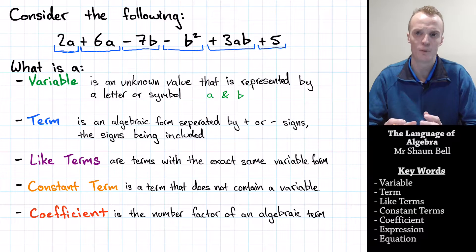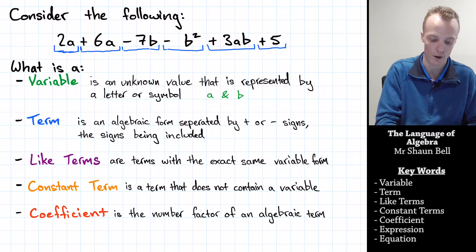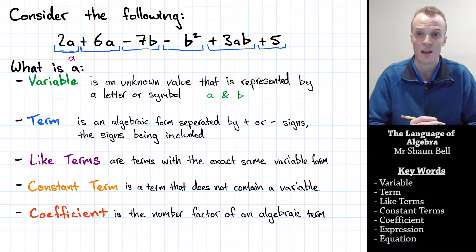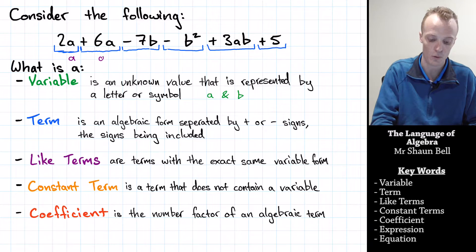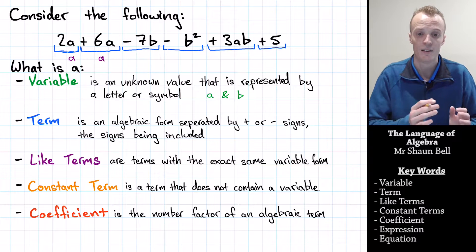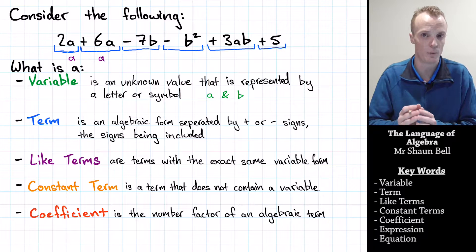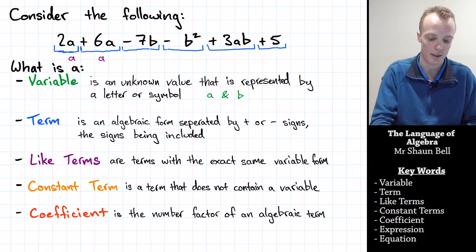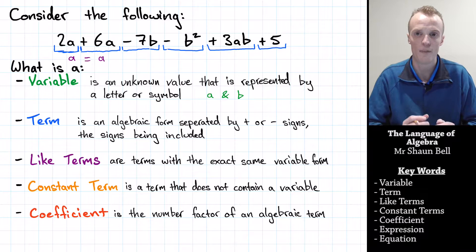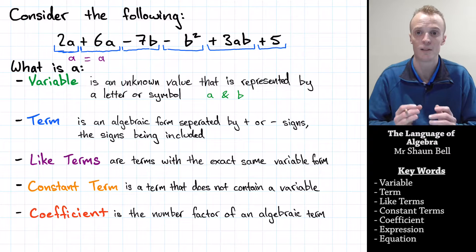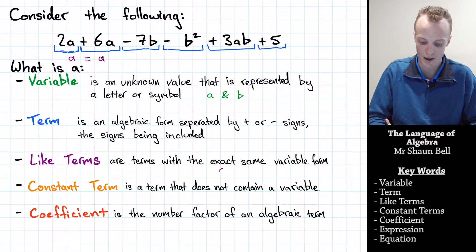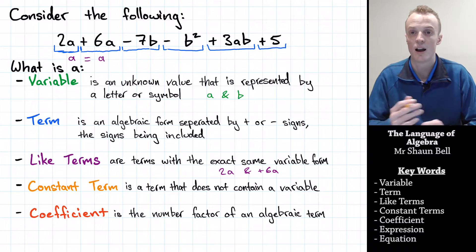Well, if we look at the first two terms of this statement, the 2A and the plus 6A, and we only looked at the variables within each of these individual terms. In the first term, the variable is A. In the second term, the variable is also A. And we'll notice that the variable in the first term is identical to the variable in the second term, so these two equal each other. When the variables within two statements equal each other, we consider them to be like terms. Therefore, 2A and plus 6A are like terms.